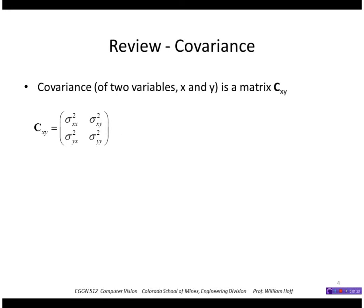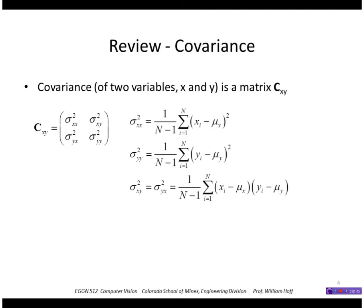If we have two variables, x and y, then we have a covariance matrix Cxy. The values for the elements of that covariance matrix are the variance of the x values, the variance of the y values, and then this is the cross covariance of x and y.